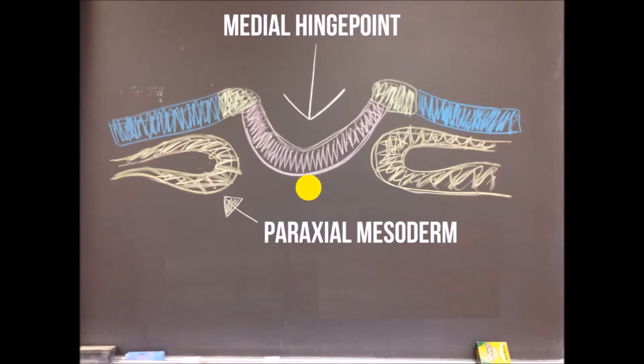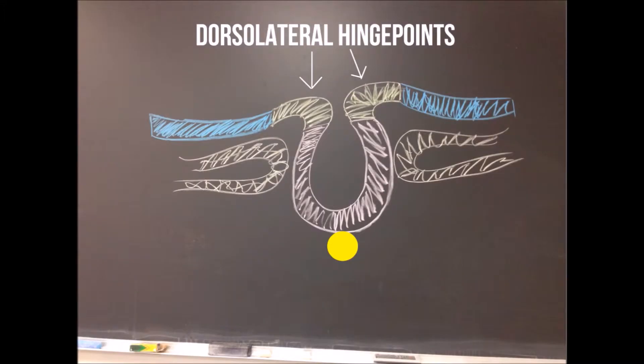The neural fold drops at its medial hinge point. The medial hinge point drops further, anchored to the notochord, forming a deep neural groove.